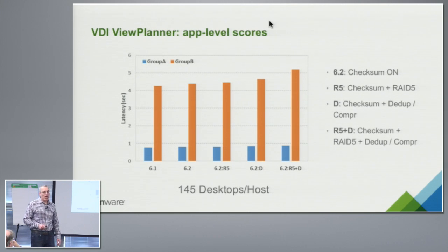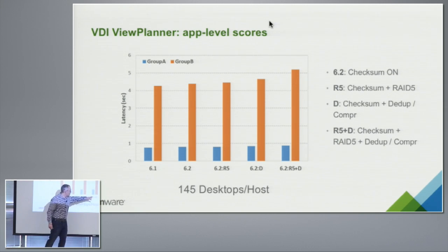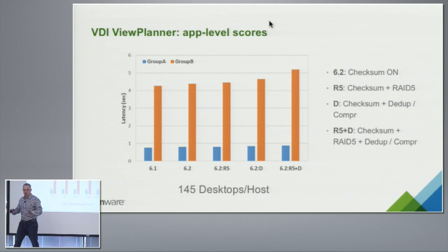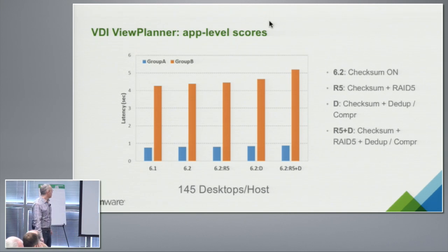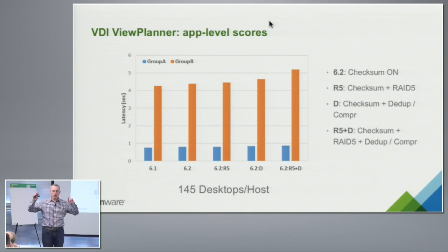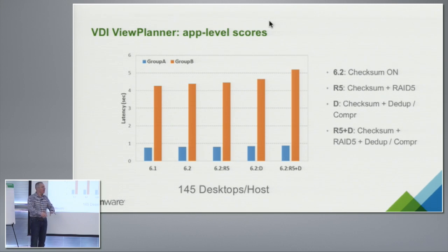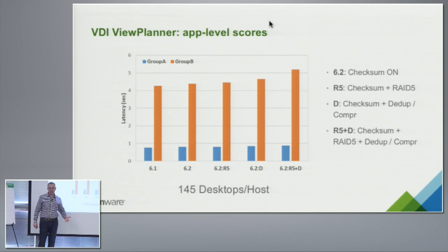Let me start with VDI — View Planner. The legend: 6.1 is the base, 6.2 with checksums, then 6.2 with RAID 5, then deduplication, and then RAID 5 and deduplication combined — that's the legend throughout this presentation. Shorter bars are better. These are latencies perceived by the end user doing things like saving files, opening files, writing. The latency for a user saving a large Word file goes from 4.3 seconds to 5.1 seconds with everything on.